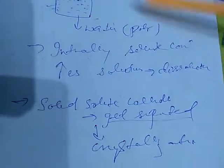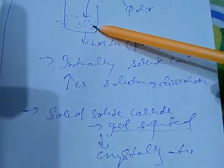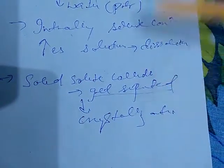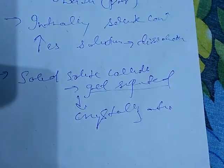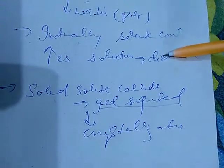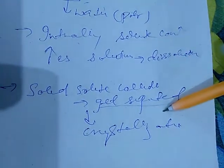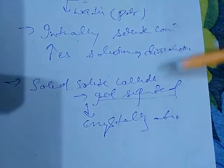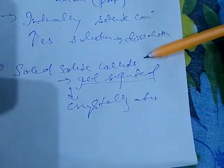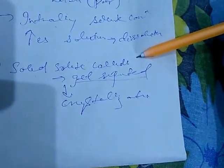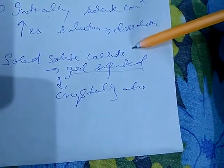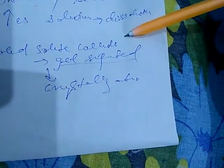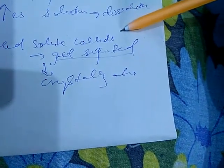Now as we keep adding solid solute into the solvent, there will come a time when the dissolution process and the crystallization process will occur at equal speeds. When dissolution and crystallization are both occurring at the same rate, we say that dynamic equilibrium is attained. At this stage, the number of solute particles going into the solution equals the number of solute particles getting separated out of the solution.